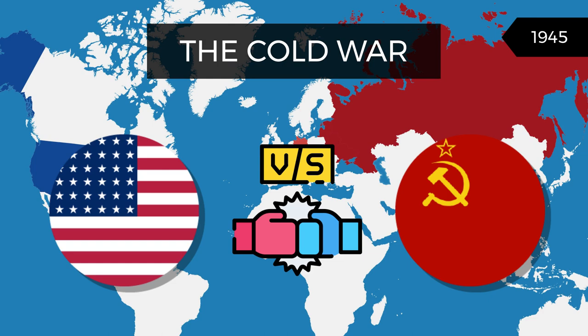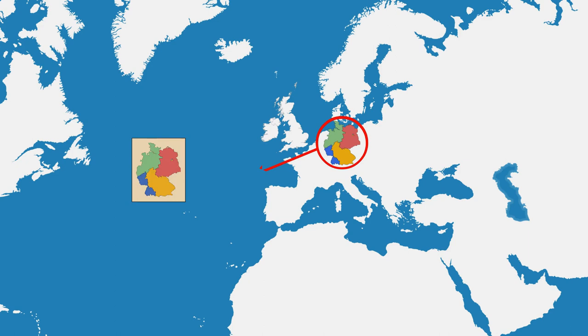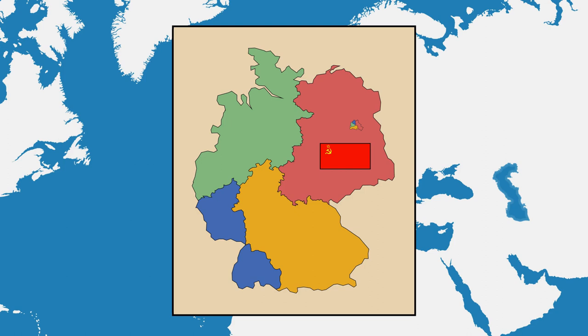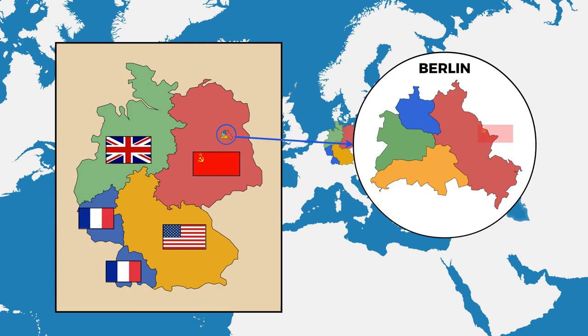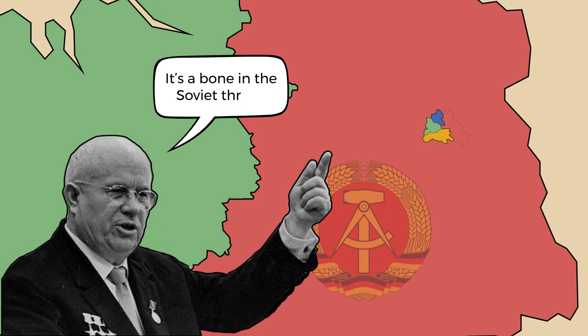Per the Yalta and Potsdam Peace Conferences, Germany was divided into four Allied occupation zones. East Germany was under the control of the Soviet Union, while the western part was split between the US, Great Britain, and France. Berlin was also divided into four similar zones. Entirely located in the Soviet zone, West Berlin became an island within communist East Germany, and was like a bone in the Soviet throat, as leader Nikita Khrushchev called it.